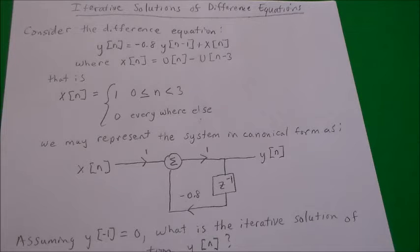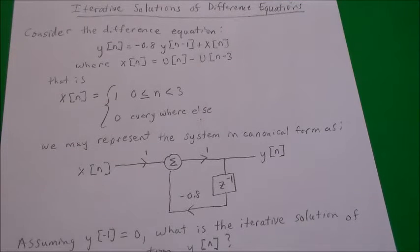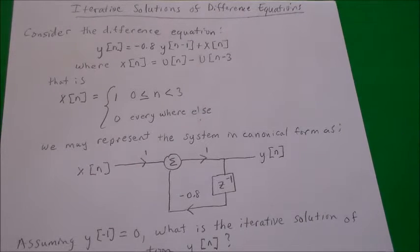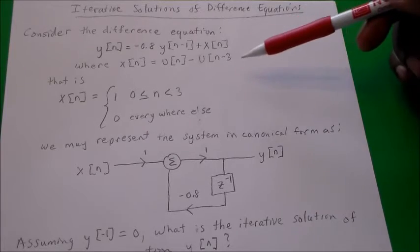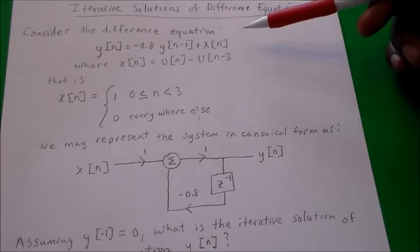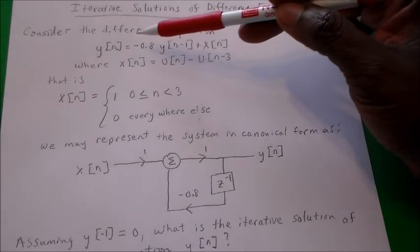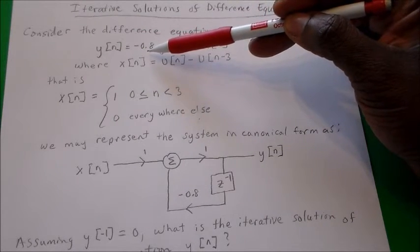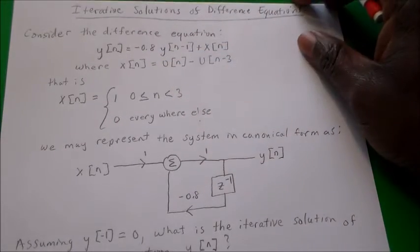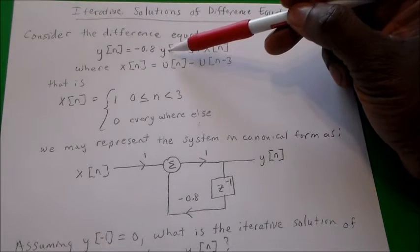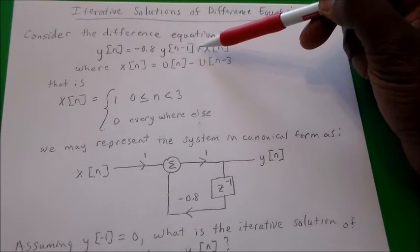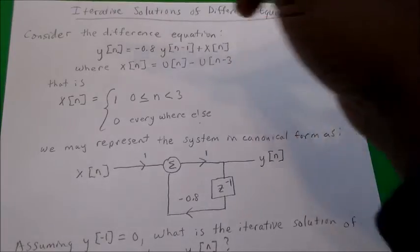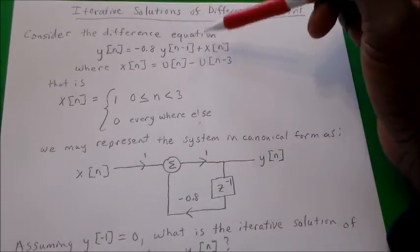In this video, we'll find the iterative solution of a difference equation. The difference equation that we will find the iterative solution for is: y(n) = -0.8 times y(n-1) plus x(n). This is the difference equation that we're looking at.